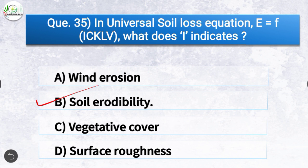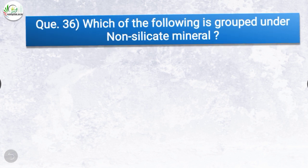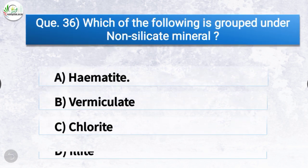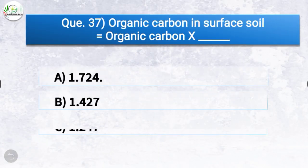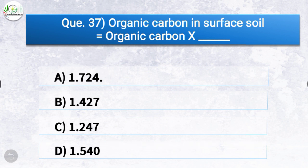Question number thirty-six: which of the following is grouped under non-silicate minerals? The correct answer is option A, hematite. Hematite is grouped under non-silicate minerals. Question number thirty-seven: organic carbon in surface soil is equal to organic carbon multiplied by what? The correct answer is option A, 1.724.